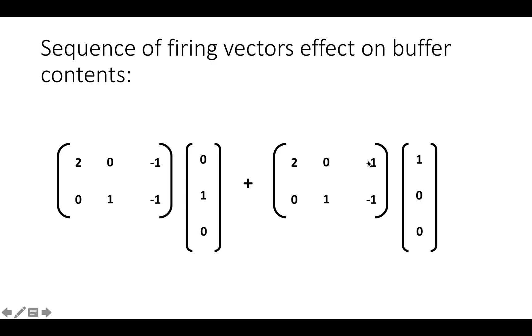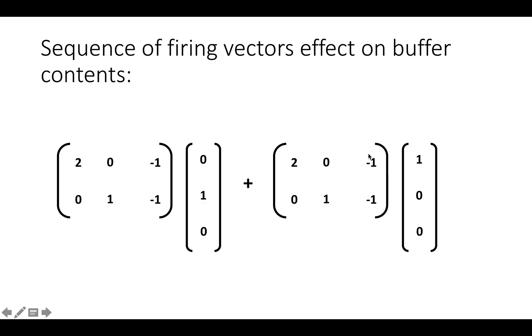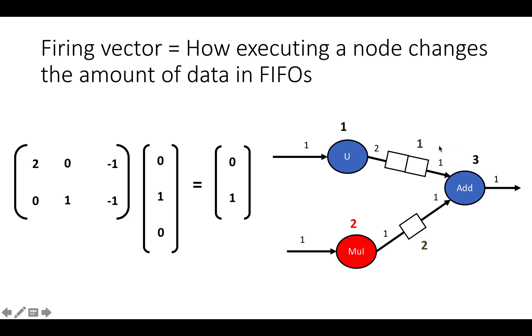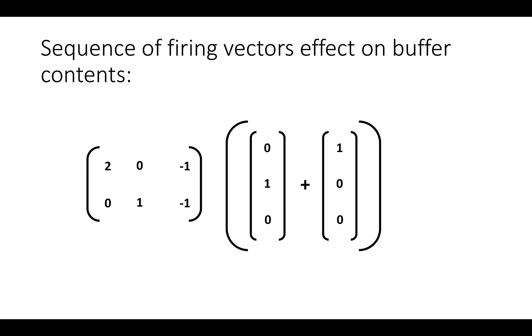We can think of the effect of the first node firing, the multiply firing, as the topology matrix times 0, 1, 0, and we can think of the effect of the upsample firing as the effect of multiplying the topology matrix by 1, 0, 0. If you know a little bit of matrix algebra, you know that matrix multiplication distributes over matrix addition, so we can rephrase this as the topology matrix times the sum of these firing vectors.